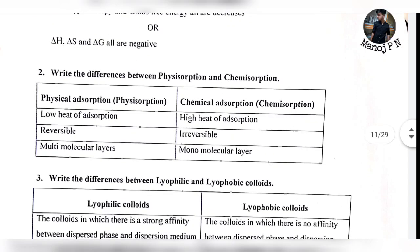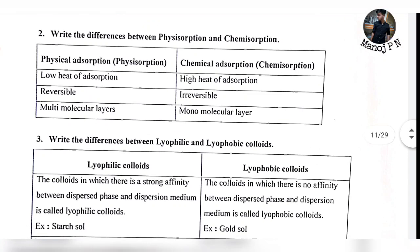Write the difference between physisorption and chemisorption. Physisorption requires low heat of adsorption, while chemisorption has high heat of adsorption. Physisorption is reversible, while chemisorption is also reversible. Physisorption involves multi-molecular layers, whereas chemisorption involves mono-molecular layers.